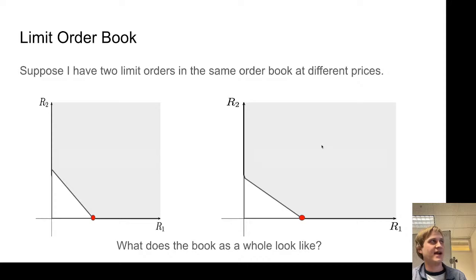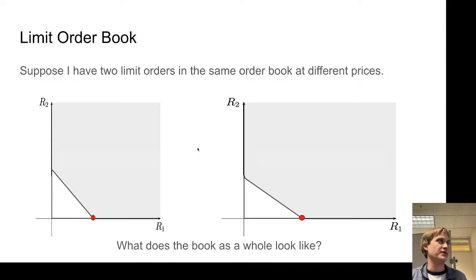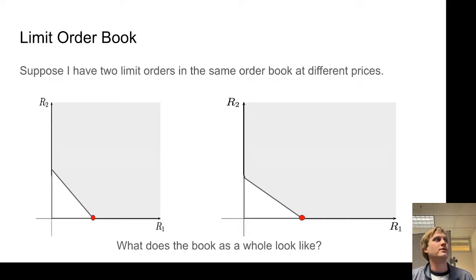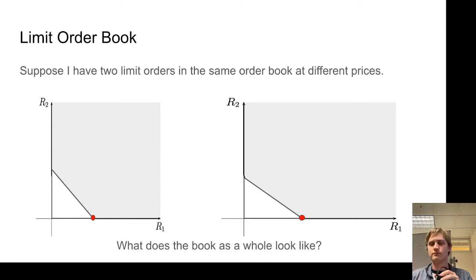So I have these two limit orders in the same order book. The question is what does the order book as a whole look like? What is their combined liquidity provision going to look like if I want to trade against both? It's going to be one side of a depth chart. Even a limit order is a sequence, so it's going to be like a shifted step function.